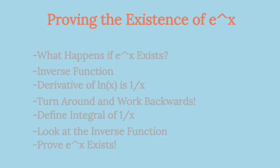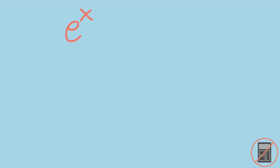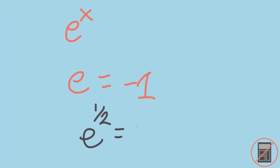We will start by looking at what must happen in order for e to the x to exist. Let's look at what possible values we could have for e. Since we don't know what e is yet, let's notice that e must be positive. Otherwise, if e to the x is negative, it will not be a continuous function — in fact, it won't be defined at all. For instance, if e was equal to negative 1, then e to the 1/2 would be an imaginary number. So therefore, if it exists, it must be greater than or equal to 0.